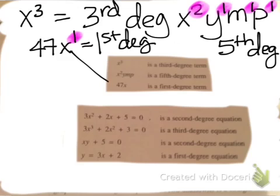47x is a first degree term because the x has an invisible one power. Now when we're talking about degree equations, what you do is you look at the highest power in the equation. So if we're looking at the first one, 3x squared is a second degree equation. 3x to the third is a third degree equation.